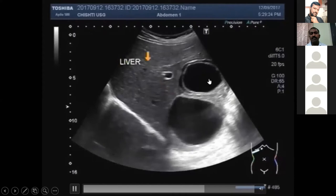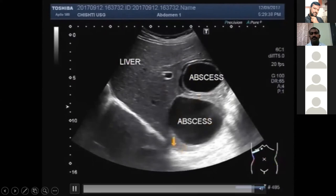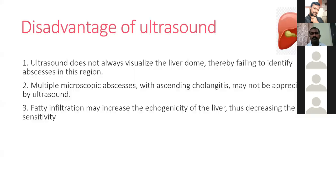The ultrasound image shows abscess cavity one and abscess cavity two in the right lobe. Disadvantages of ultrasound: it may not visualize the entire liver dome, failing to identify abscesses located at the dome. Multiple micro-abscesses with ascending cholangitis may not be well appreciated. In patients with a fatty liver, echogenic variation decreases the sensitivity of ultrasound for liver abscess.